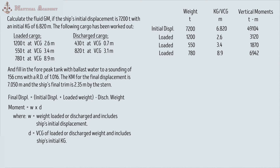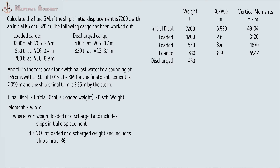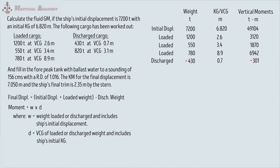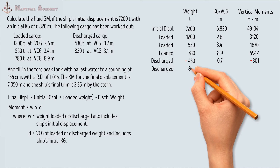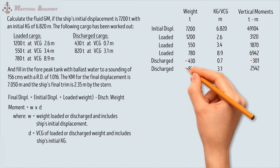Next, we proceed to the cargo being discharged: 430 tons multiplied by its VCG of 0.7 meter — the vertical moment is 301 ton-meter. We mark 430 tons and 301 ton-meter with negative signs because we will subtract all discharged weight and moment to find the final displacement and final moment. Another cargo is being discharged with a weight of 820 tons times its VCG of 3.1 meters — the moment is 2,542 ton-meter. Mark those with negative signs since it is discharged.